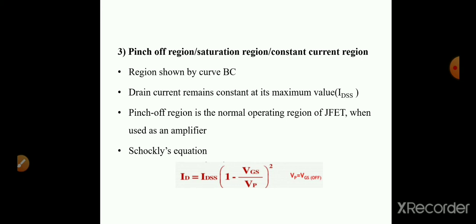The drain current ID equals IDSS into (1 minus VGS by VP) whole squared. IDSS is the drain-to-source saturation current — the maximum drain current when gate-to-source voltage equals zero. This equation is commonly called the Shockley equation.